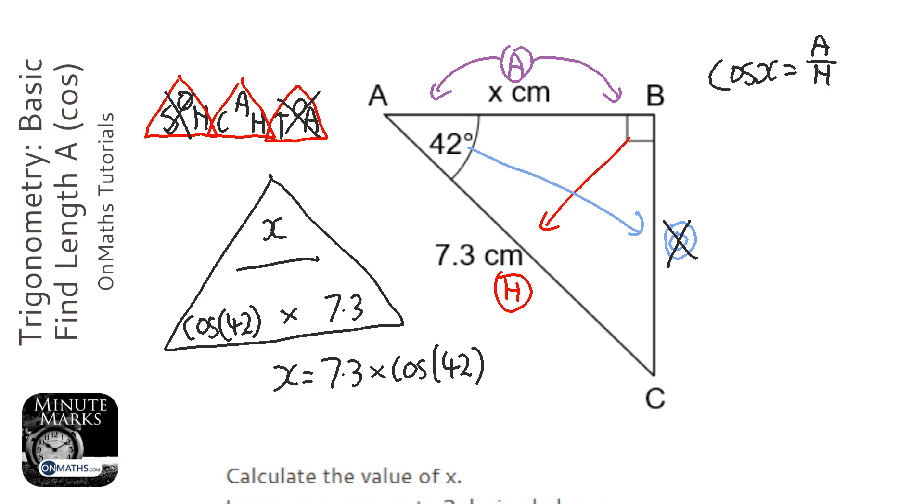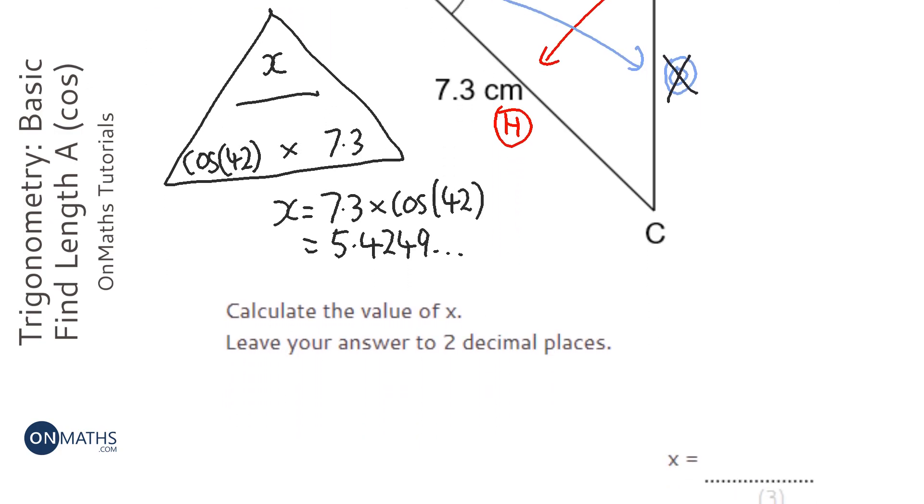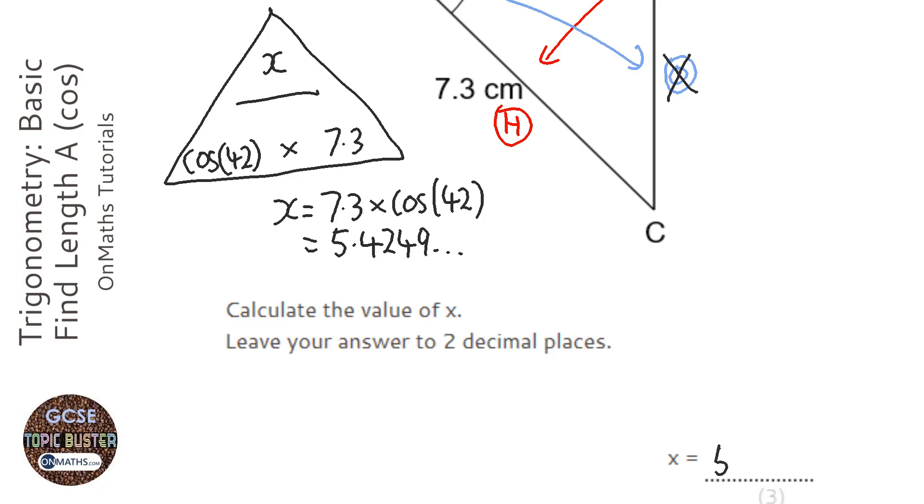So I'm going to type in 7.3, and you don't even need to type the times button, it'll work anyway. Cos 42 and then close the bracket. And that equals 5.4249 and so on. So to two decimal places that's going to be 5.42.